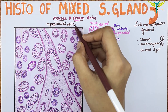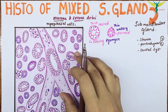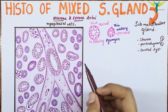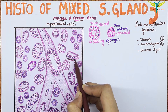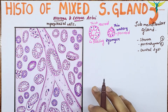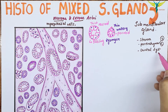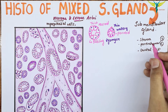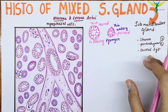The myoepithelial cells are present in relation to the acini and the intercalated ducts of the salivary gland. You can see the myoepithelial cell in this diagram. In the conducting part, ducts open into the ductal system, which helps to move the secretions produced by the acini.